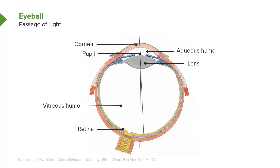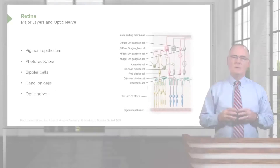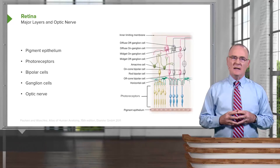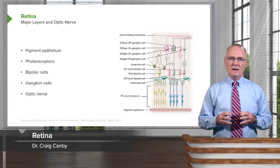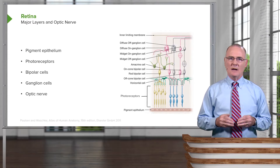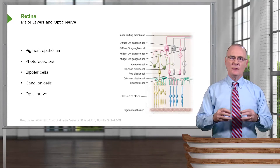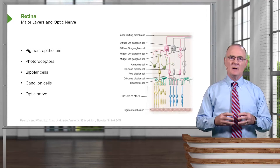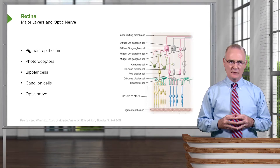Then the light will hit the retina, and by striking the retina, photoreceptor cells will become activated. This slide depicts the major layers of the retina that will allow the visual scenes to be delivered through the optic nerve.